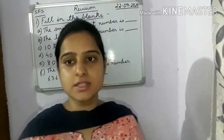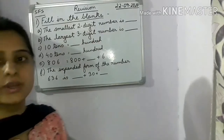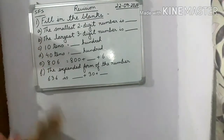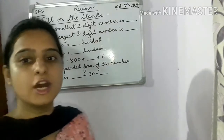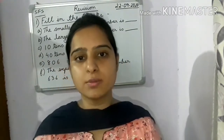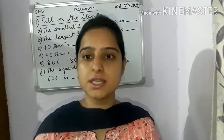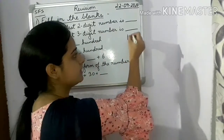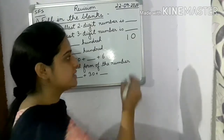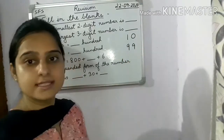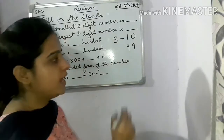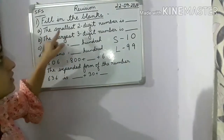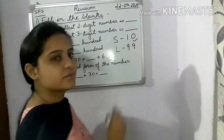Let's start with our first question: fill in the blanks. You can note down this question and try to do it yourself first, then let's discuss the answers. First, A: the smallest two-digit number is. You know that one-digit numbers start from 0 and end at 9. Two-digit numbers start from 10 and end at 99. So 10 is the smallest two-digit number. The answer is 10.